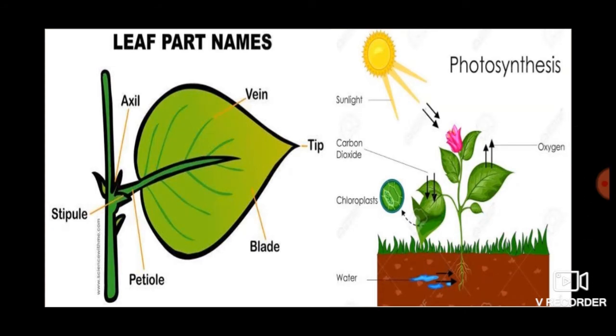Now kids, we learn the important functions of the leaves. Leaves are also called the kitchen or the food factory of the plant. Green leaves absorb light from the sun.